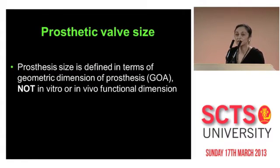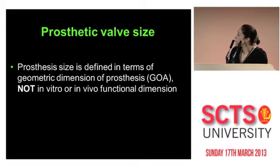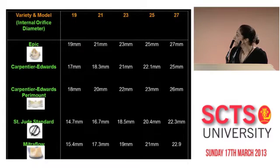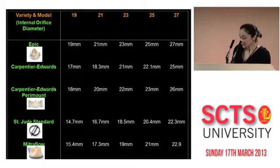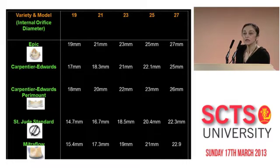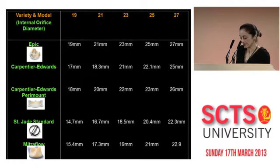You heard the definition of mismatch. It is when the geometric dimension of the prosthesis in vitro — and it's a geometric dimension, not a functional assessment of the valve. But these geometric dimensions vary widely with different manufacturers. Some measure an internal orifice, some measure an external orifice, and some measure the stent.